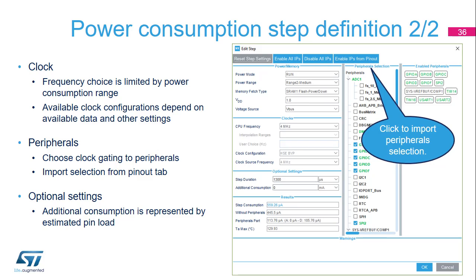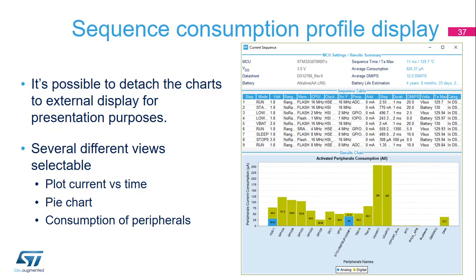See the documentation for a complete list of options. Disabling the clock for an unused peripheral is a sure way to conserve energy. Check the peripherals that will be powered during the step duration. By clicking on the Import button, all the peripherals that will be initialized by the generated code will be selected. Finally, define the step duration and any additional consumption settings. Additional consumption may be represented by various loads attached to pins, such as LEDs, buttons, or communication interfaces.